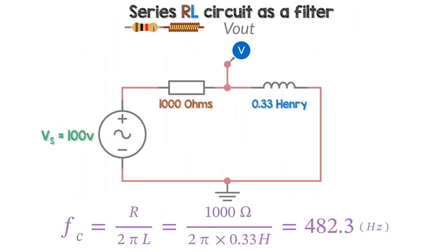Our RL filter has a 1 kohm resistor and a 0.33 Henry inductor. The supply voltage Vs is a sine wave with an amplitude or peak voltage of 100 volts. This filter has a cutoff frequency of around 482 hertz.